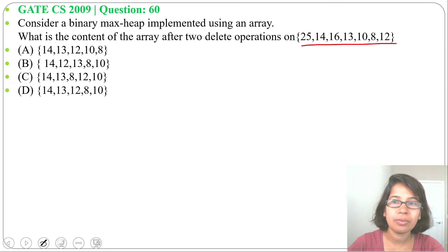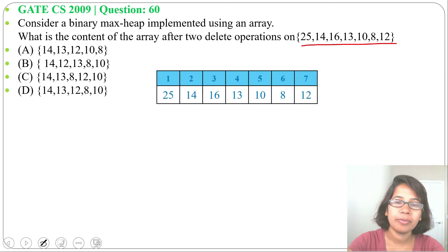So index will be starting from 1, 1, 2 till 7 here. N equals 7, total 7 values are given. So for i equals 7, for deletion, first step we need to exchange root with the last node.